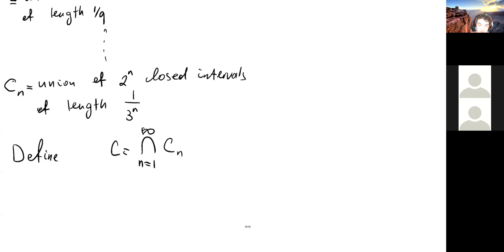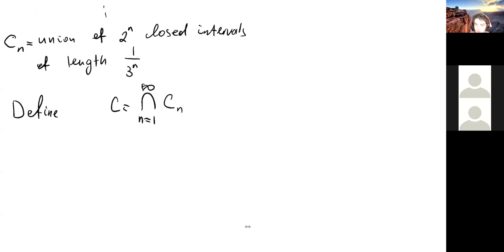The Cantor set C is defined as the intersection from n=1 to infinity of Cn. This is a very funny set — it contains no solid intervals. If C contained an interval, at some point we would erase its middle third. The set has nice topological properties — it is nowhere dense, for example. It is called a perfect set — we will define this in the homework.